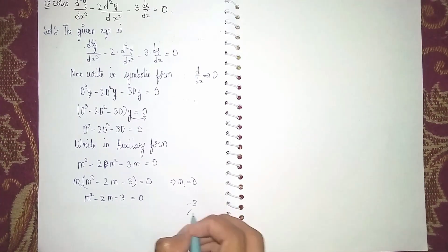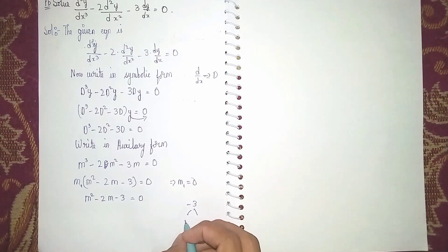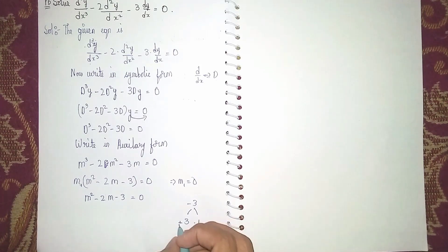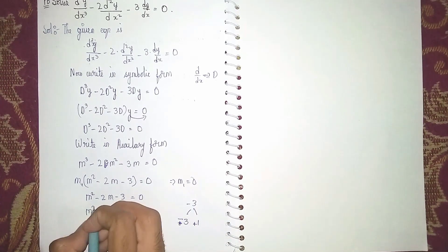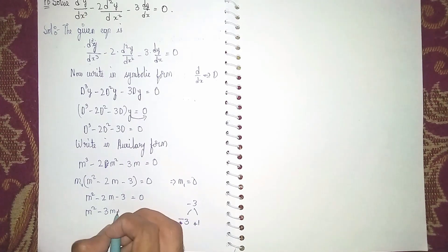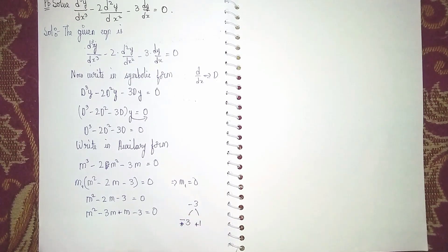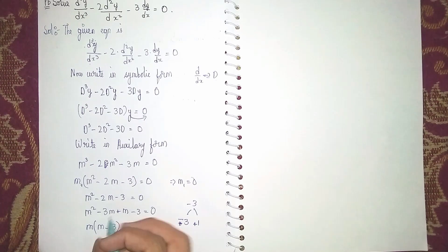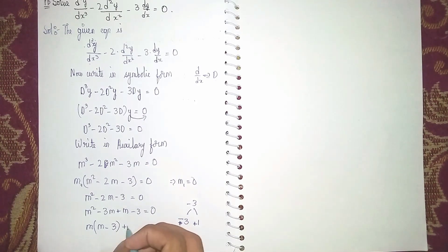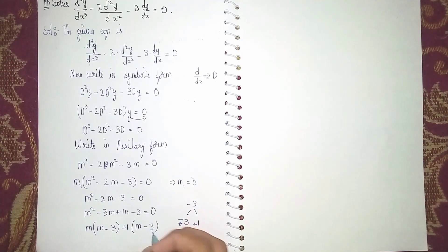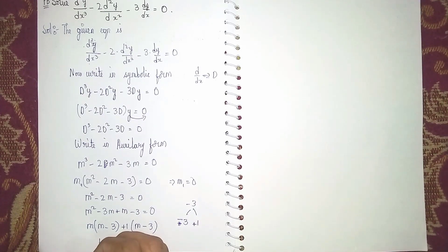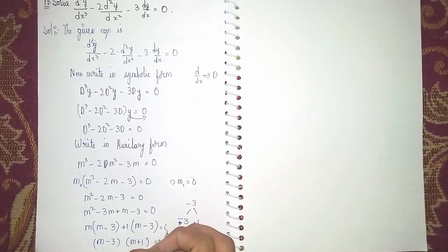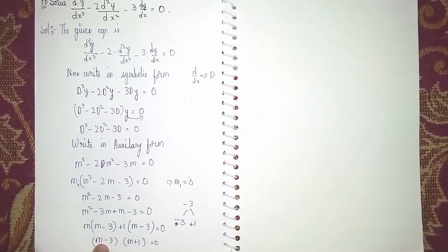For middle term splitting, we need to split minus 3 as minus 3 times plus 1. So the equation becomes m² minus 3m plus m minus 3 equals zero. Taking m common gives m(m minus 3), and taking plus 1 common gives plus 1(m minus 3). Now take (m minus 3) common, giving factors (m minus 3)(m plus 1) equals zero.